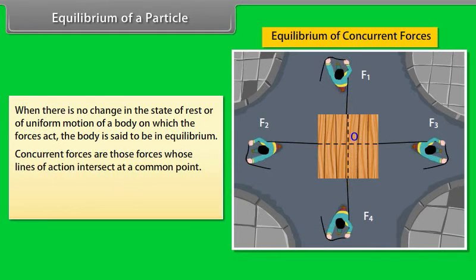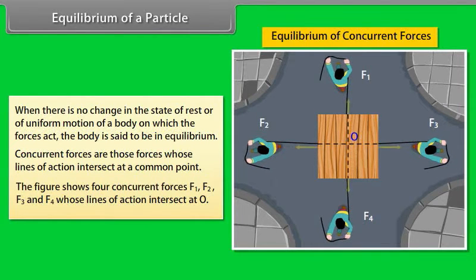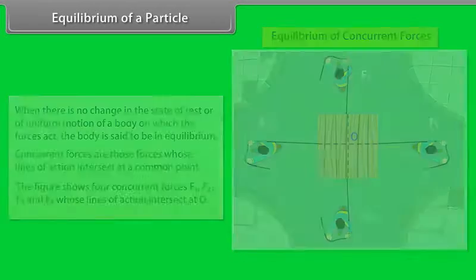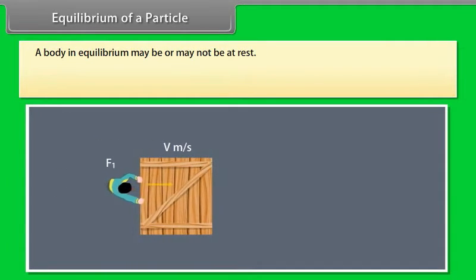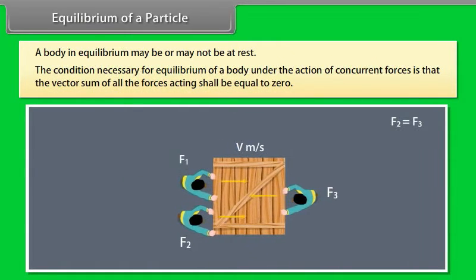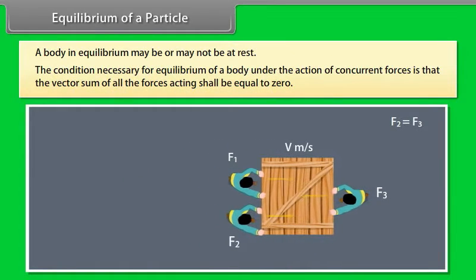Concurrent forces are those forces whose lines of action intersect at a common point. The figure shows four concurrent forces f1, f2, f3, and f4 whose lines of action intersect at O. A body in equilibrium may or may not be at rest. The condition necessary for equilibrium under concurrent forces is that the vector sum of all forces acting shall be equal to zero.